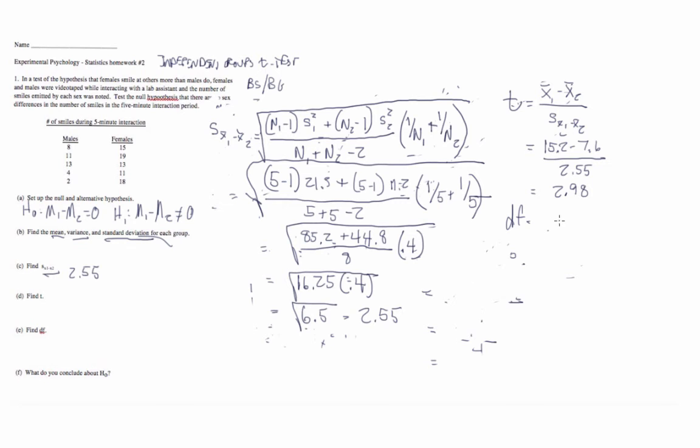Our degrees of freedom is going to be group 1 minus 1 plus group 2 minus 1. So 4 plus 4 is equal to 8. If we look up the T-critical for that, it's going to be equal to 2.31, and so we compare our T-obtained, 2.98, to our T-critical, 2.31. 2.98 is greater.